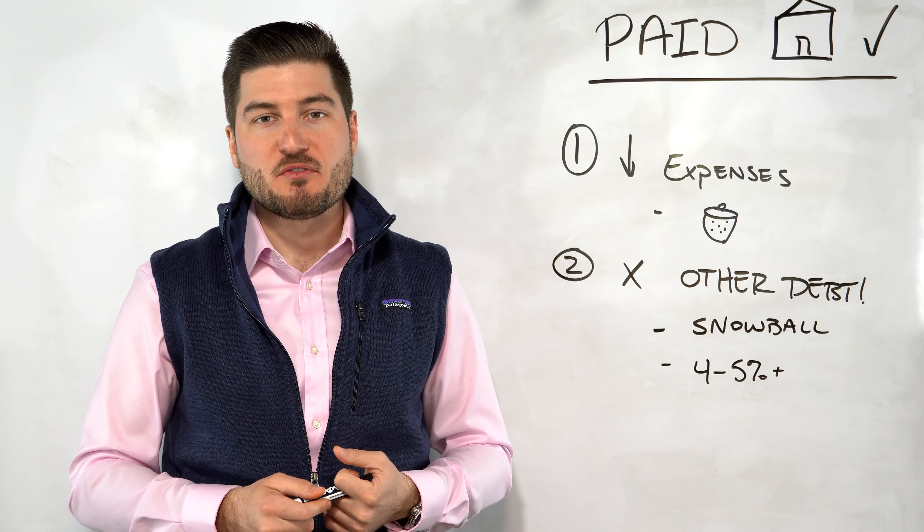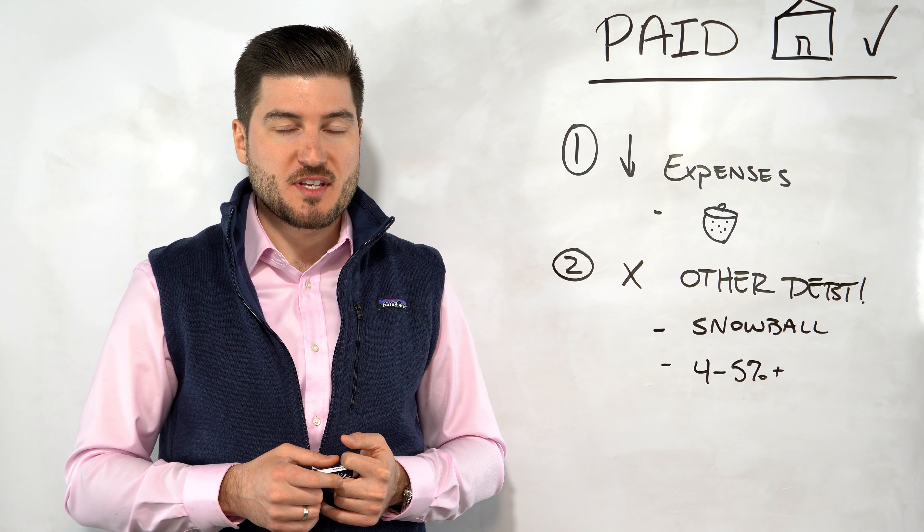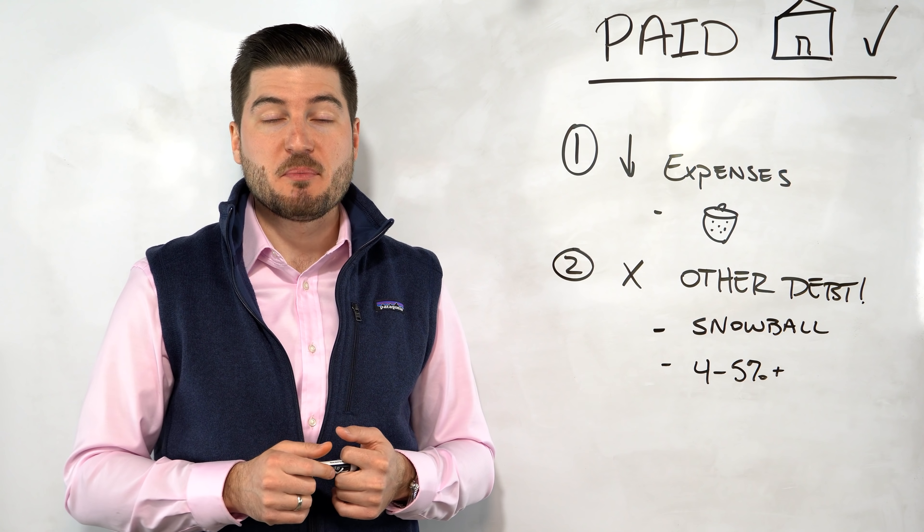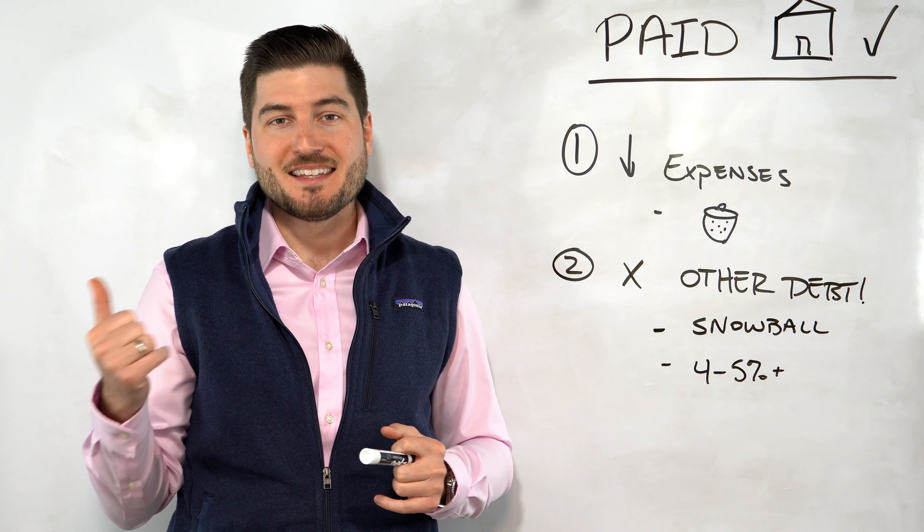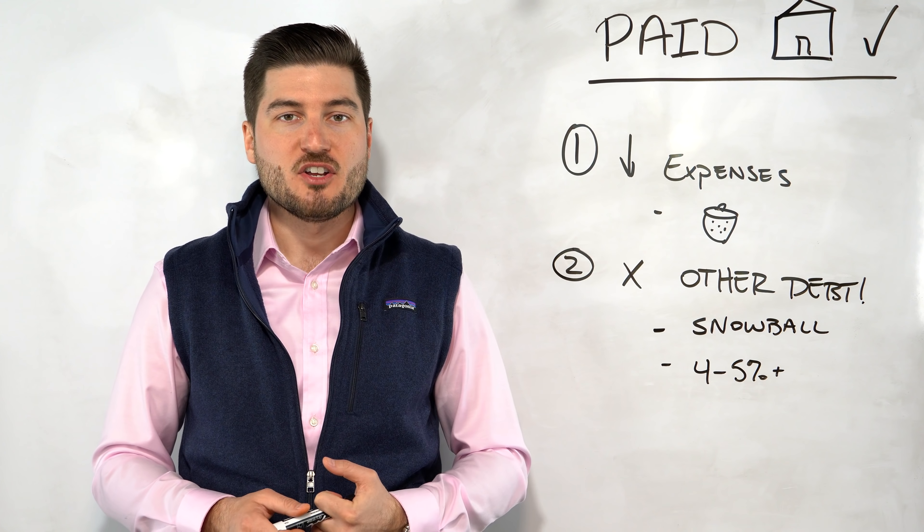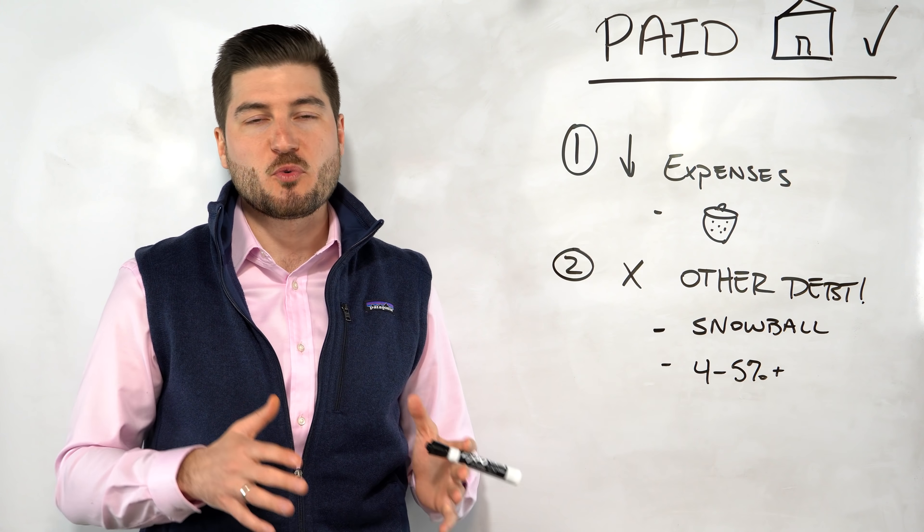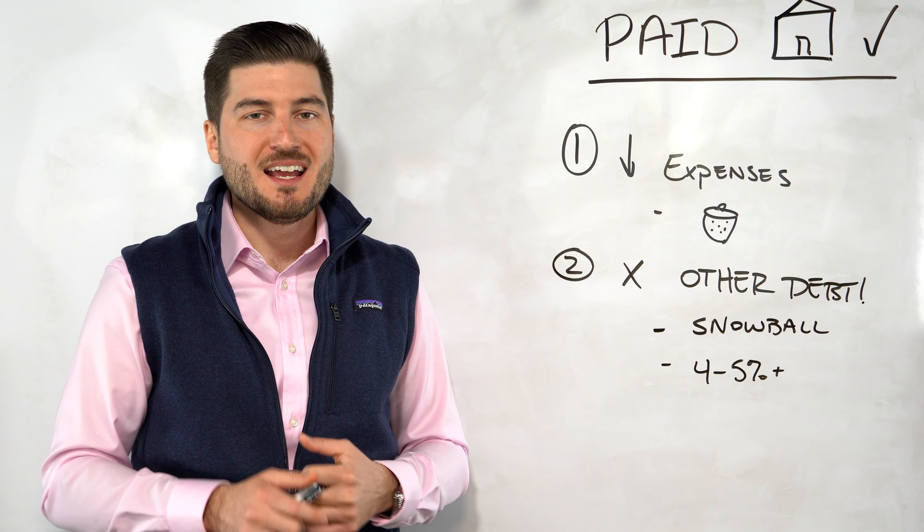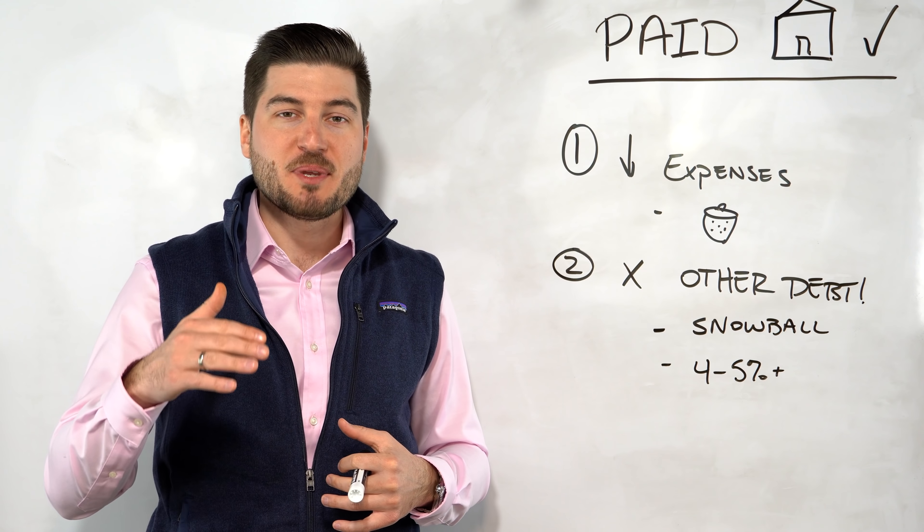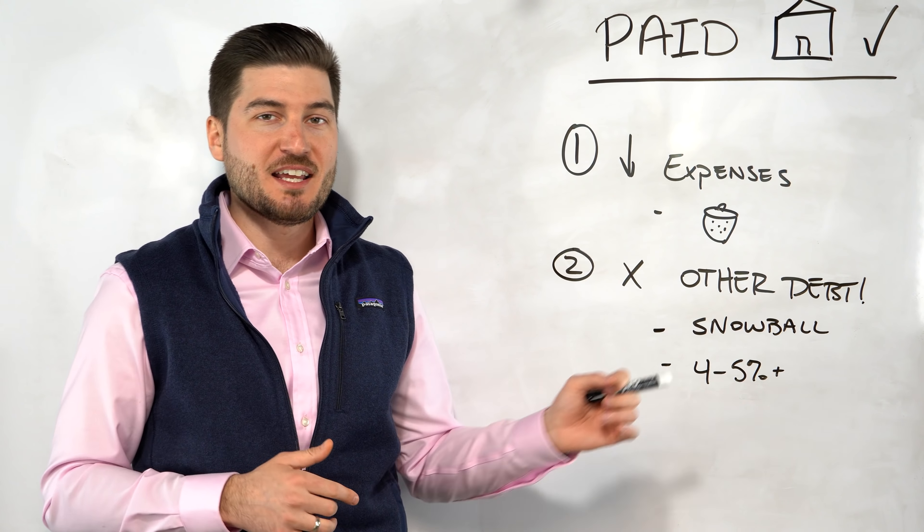Number two is getting rid of other debt or tackling other debt. So you can snowball your mortgage payment into other debts that you may have like a car payment or student loans, for example. So instead of paying that $1,200, $1,300 a month for a mortgage or whatever your mortgage payment may be, you can take that money and then plow it into other debts. So when you have other higher interest debts and what I consider higher interest debt to be is anywhere that's greater than four or five percent, at least in this interest rate environment, I would focus on paying off that debt rather than investing unless you know for a fact you're going to be able to beat that with an after-tax return. So number two is getting rid of other debt.